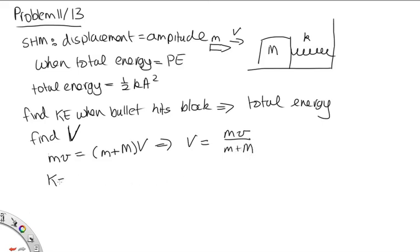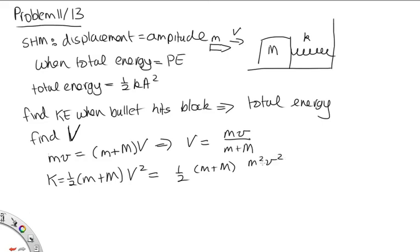The kinetic energy equals one half times the combined mass, little m plus big M, times big V squared. Substituting V in, that's one half times (little m plus big M) times m squared v squared over (little m plus big M) squared. One factor of (m plus M) cancels, leaving m squared v squared over 2(m plus M).